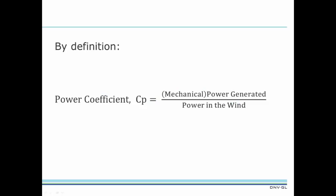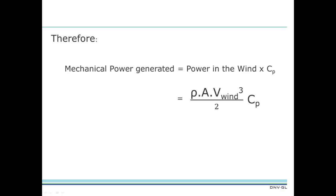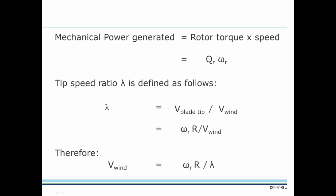By definition, the power coefficient, Cp, equals the mechanical power generated by the rotor divided by the power in the wind. Rearranging this, we can write this equation for mechanical power generated. Mechanical power also equals rotor torque times rotor speed. And the tip speed ratio is defined as the ratio of the blade tip speed to the wind speed. Rearranging this, wind speed equals omega r over lambda.